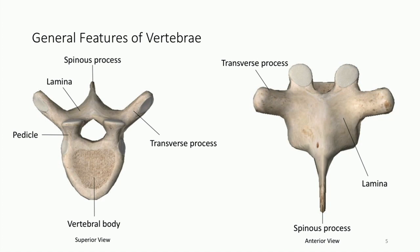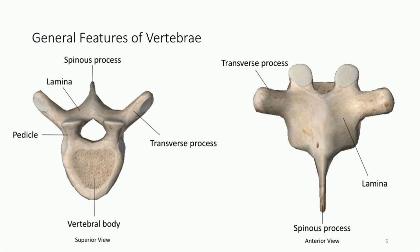We can see the lamina on both the superior and anterior views. Again, there are two sets of lamina — one on the left side and one on the right. By joining these processes together, we create an opening within the vertebra called the vertebral foramen, which will ultimately house the spinal cord itself.